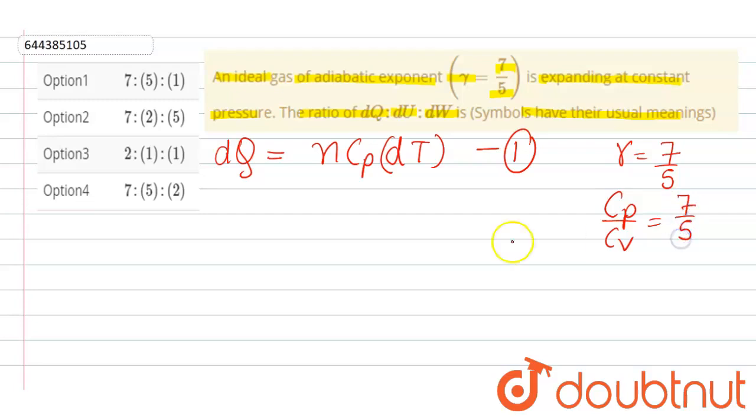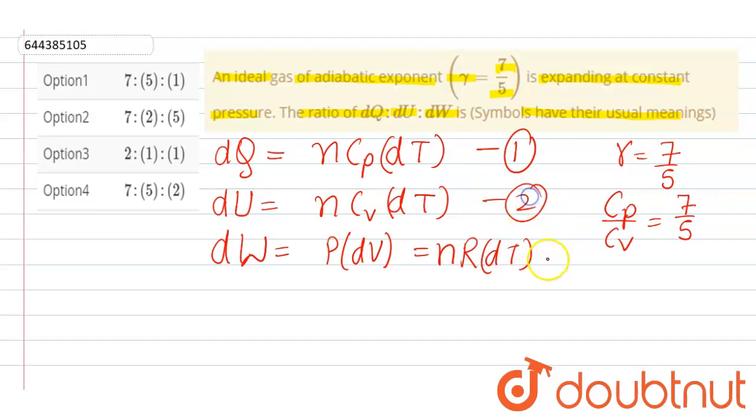And dU is given nC_v dT, and dW is given PdV, which can be written as nRdT. This is second equation and this is third equation.